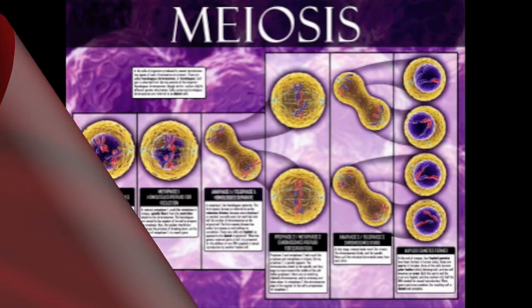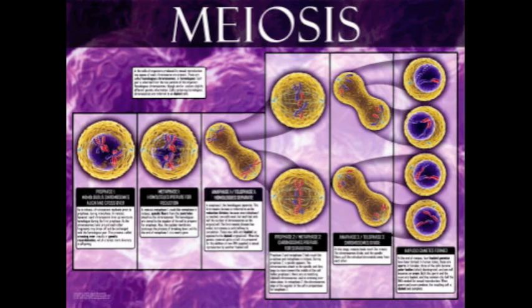Meiosis is a sexual reproduction in which the number of chromosomes are reduced by half through the separation of homologous chromosomes in a diploid cell.